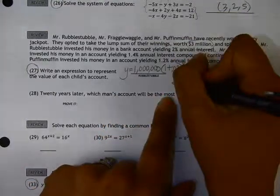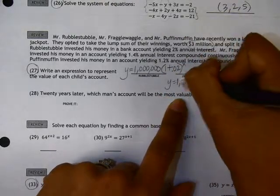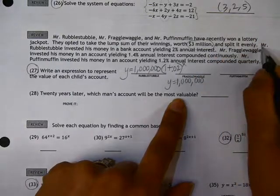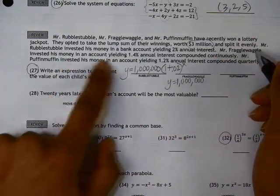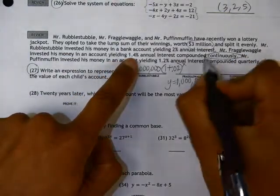Mr. Fraggle-Waggle, he also got $1 million. So $1 million, but his account was invested in an account yielding 1.4% interest, compounded continuously.